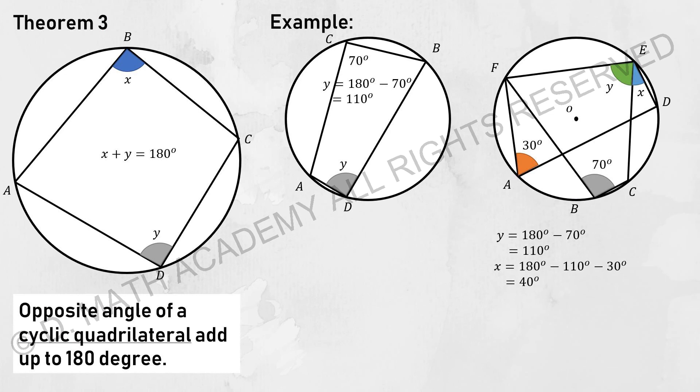For theorem number three, this is the concept of cyclic quadrilateral. What cyclic quadrilateral means is that where opposite angles of a quadrilateral that is inside a circle add up, it will form 180 degrees. I attached two examples over there. So ADB plus ACB will be equal to 180, hence Y will be 110.